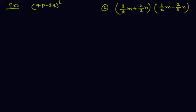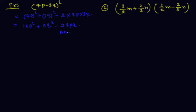Now let us discuss some applications of these identities. In the first example, apply (A − B)² whole square. This gives (4P)² + (3Q)² − 2 × 4P × 3Q, which equals 16P² + 9Q² − 24PQ. So this is the required answer.